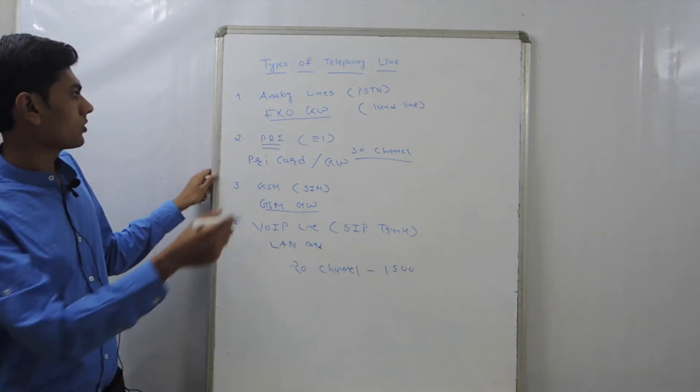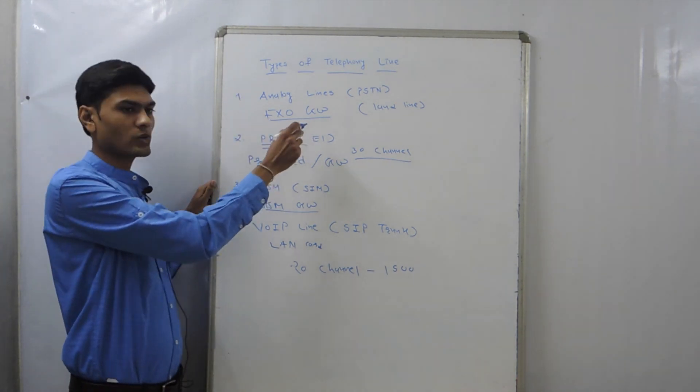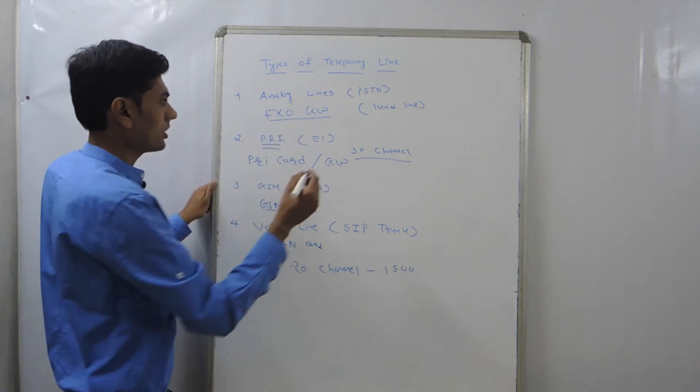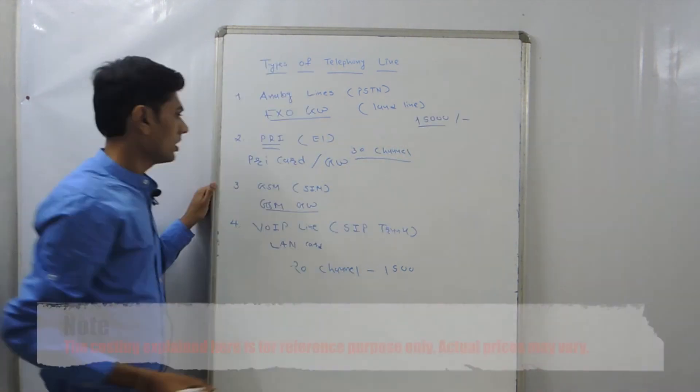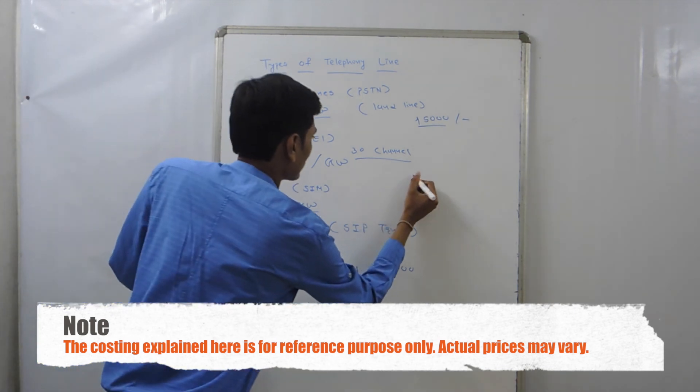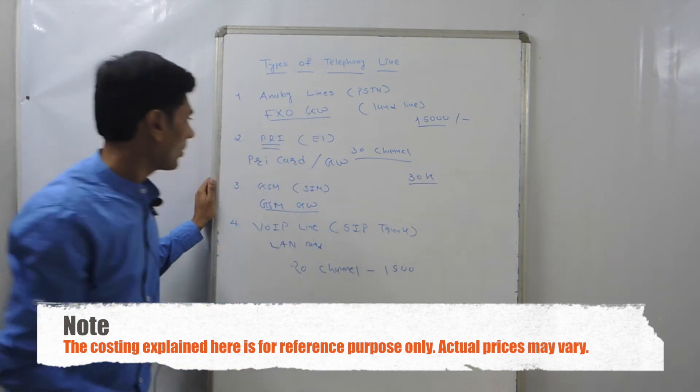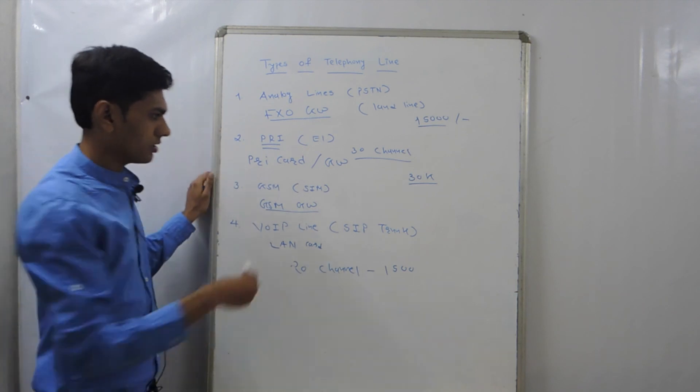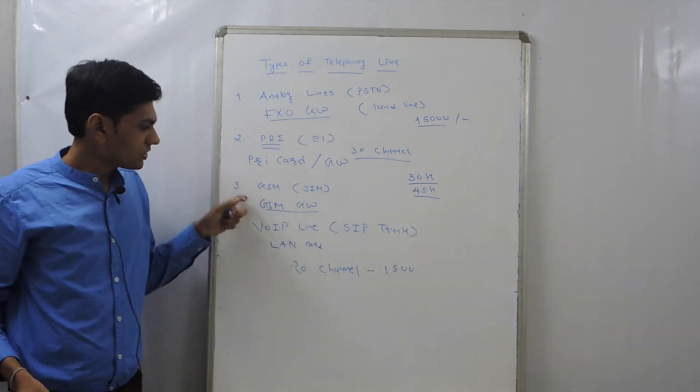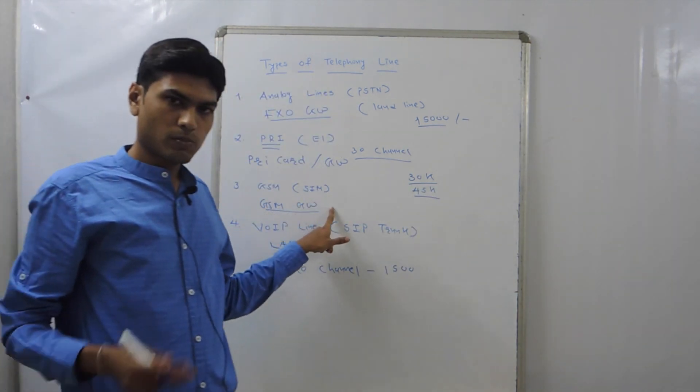Now we try to understand the pricing. So suppose you take FXO gateway for four port, it's around 15,000. If you take PRI card, it is 30,000, or if you take PRI gateway, it is 45,000.